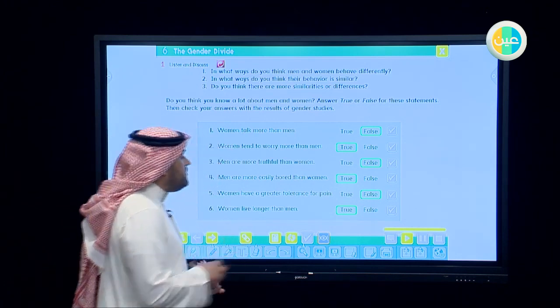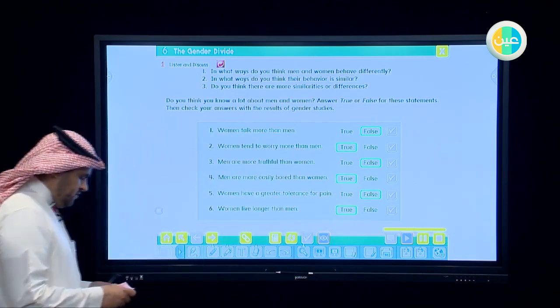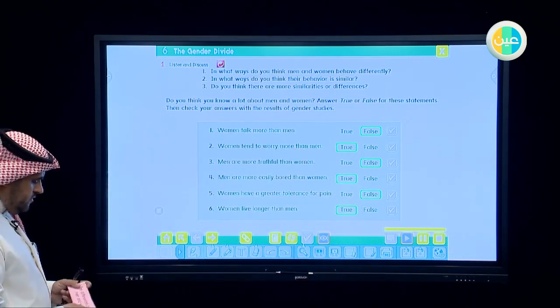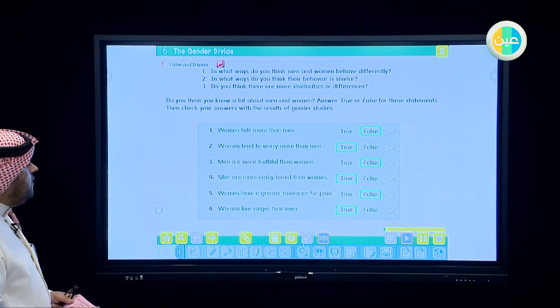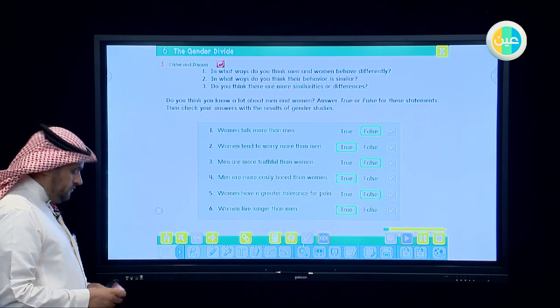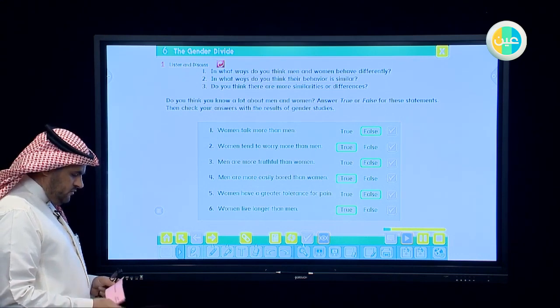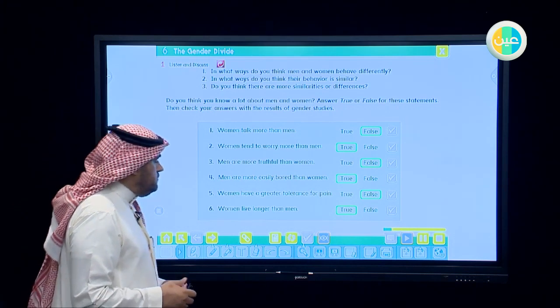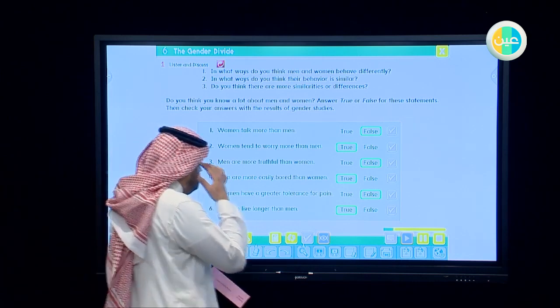Then let's read, listen, and we will discuss each part later on. Do you think you know a lot about men and women? Answer true or false for these statements, then check your answers with the results of gender studies. One, women talk more than men. Two, women tend to worry more than men. Three, men are more truthful than women. Four, men are more easily bored than women. Five, women have a greater tolerance for pain. Six, women live longer than men.